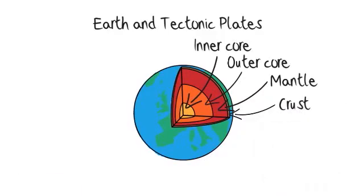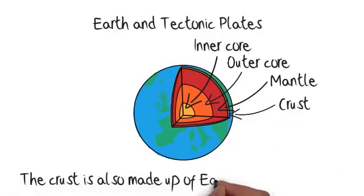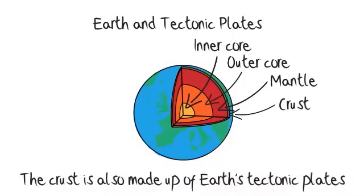The crust is also made up of Earth's tectonic plates, which move constantly over the mantle and occasionally collide. This is how earthquakes and volcanoes occur.